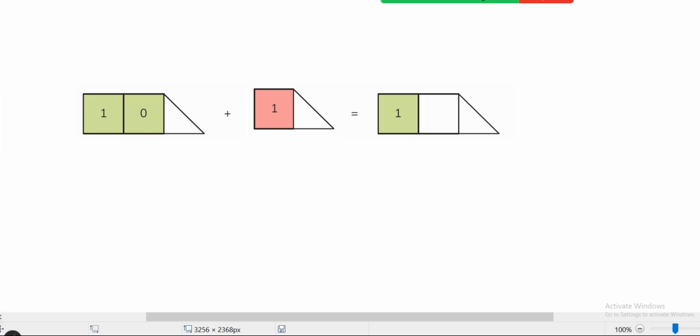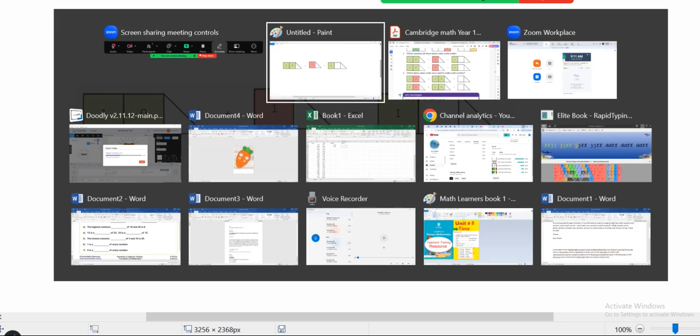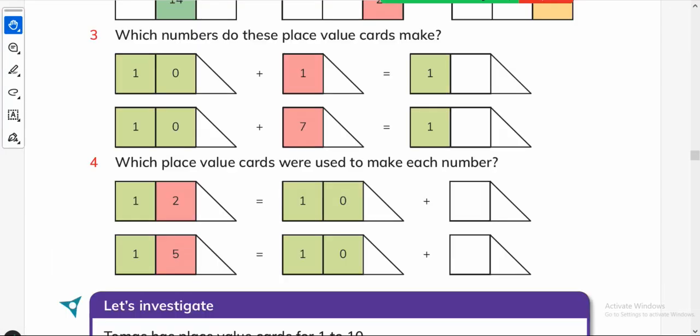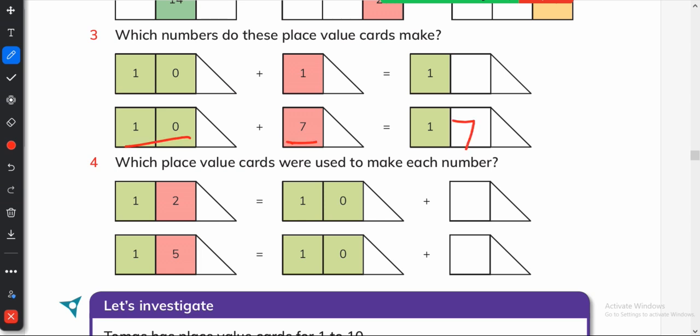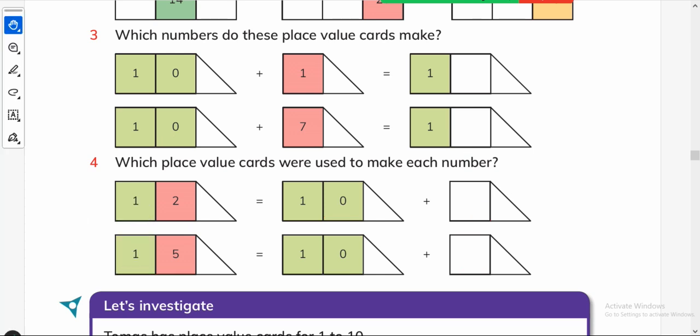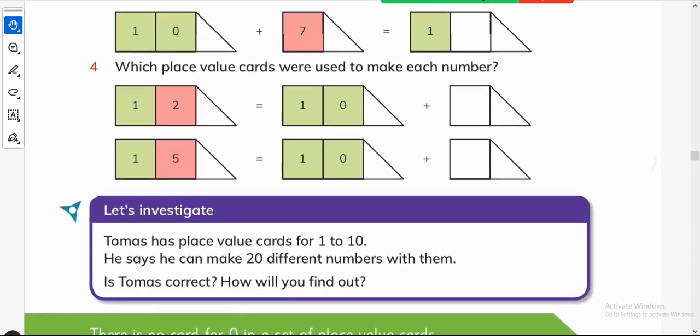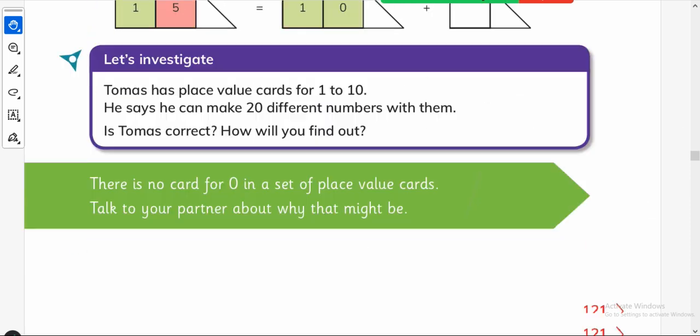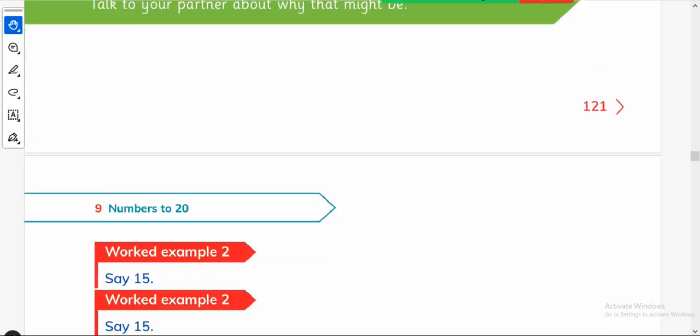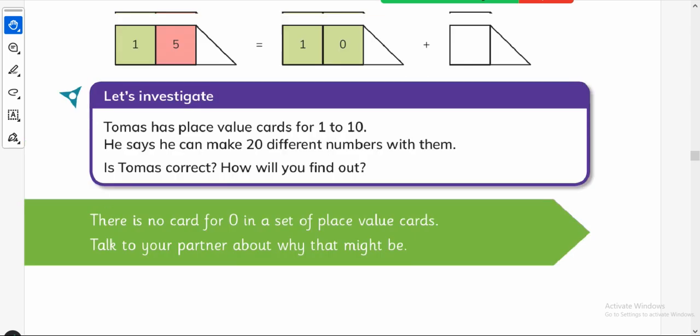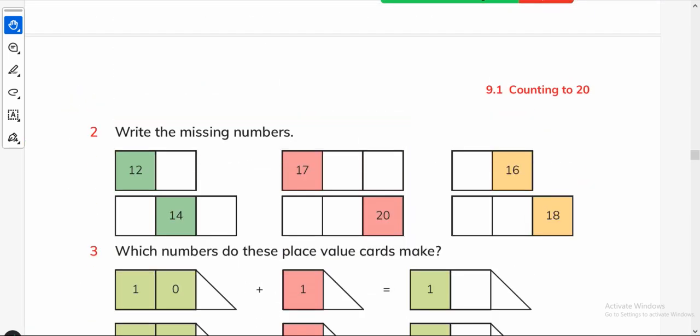After giving the concept of this triangle and telling them that these are 1's and these are 10's, tell them to simply add. 10 plus 7 will be 17. Which place value cards were used to make each number? 12 is equal to 10 plus 2. 15 is equal to 10 plus 5. So place value cards and their introduction was the important thing in my today's video. We will do rest of the things later in some other video. Thanks for watching. Allah Hafiz.